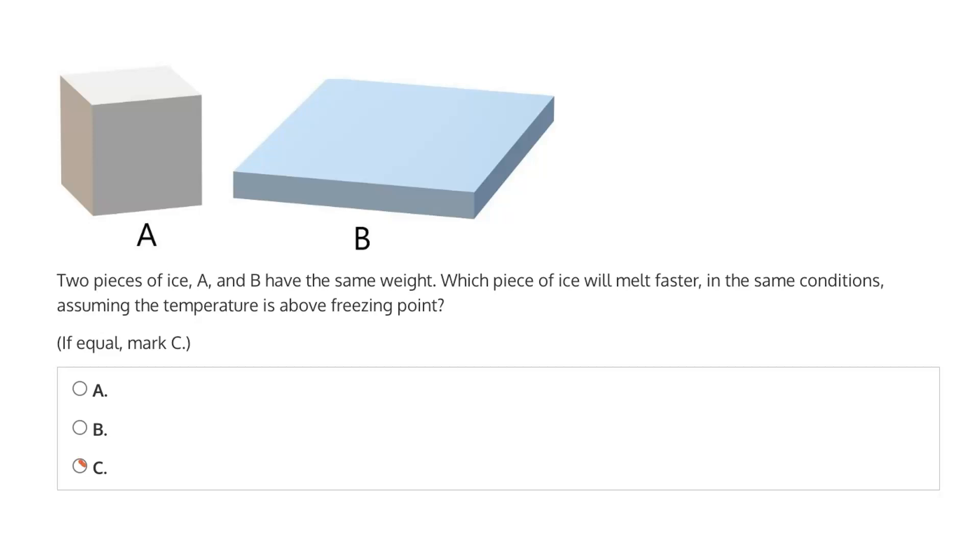A, B, or if equal, mark C. So again, we know that they're the same weight, so we know we have the same amount of ice in both A and B.